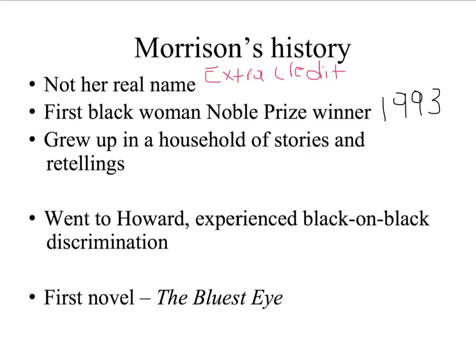Even though she was surrounded by people who looked like her and ostensibly were like her at Howard, she said that she really experienced severe discrimination there — lots of discrimination based on skin color, the light skin versus dark skin dynamic. That was really an eye-opener for her, that there could be so much discrimination within a race of people — not white people discriminating against black people, but black people discriminating against other black people. This is another theme that comes up in a lot of her books.